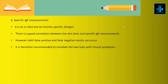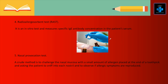Next is specific IgE measurement, an in vitro test to find the specific allergen. There is good correlation between the skin test and specific IgE measurements; however, both false positive and false negative results can occur, so it is recommended to correlate both tests with clinical symptoms. The Radio Allergo Sorbent Test (RAST) is also an in vitro test that measures specific IgE antibody concentration in the patient's serum. Then we have the nasal provocation test, a crude method to challenge the nasal mucosa with a small amount of allergen placed at the end of a toothpick, asking the patient to sniff into each nostril and observe if allergic symptoms are produced.